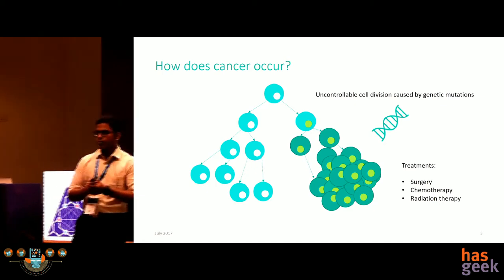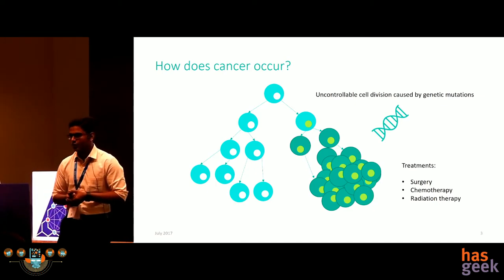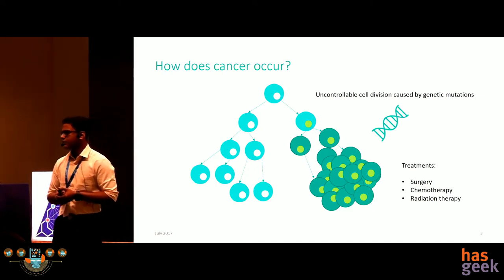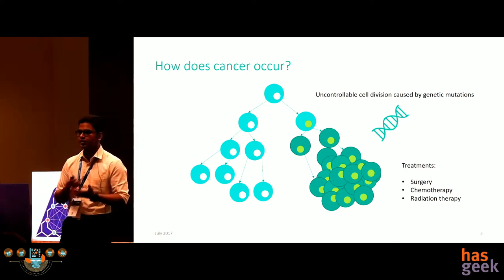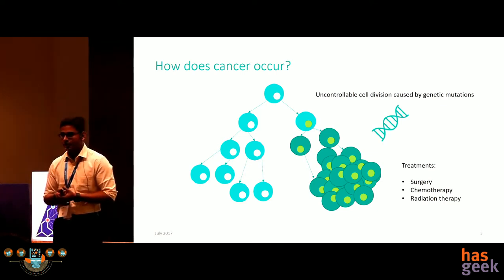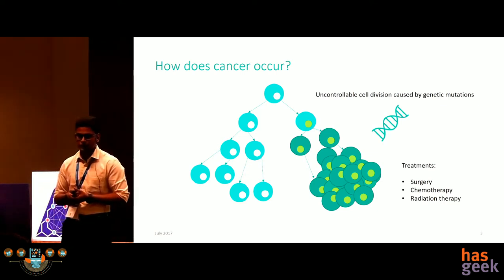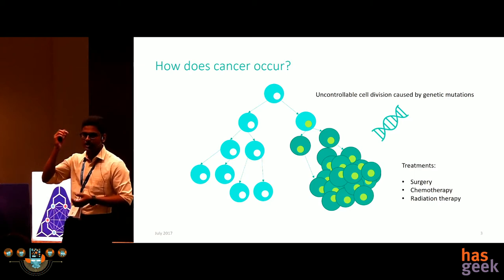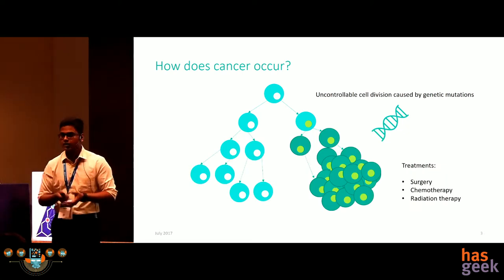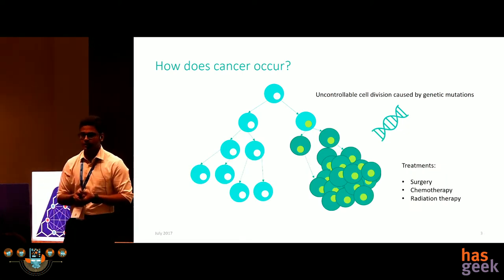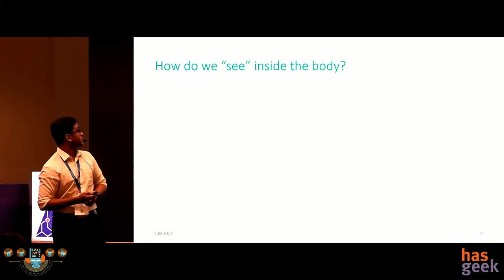If you have a lump of mass and want to know if it's cancer, the ideal scenario is to take a biopsy of the tissue and analyze it in a pathological slide. But for brain cancers especially, this is very difficult — you'd have to create a hole in your skull to take tissue from within the brain, which can impair other brain functions. This is where medical imaging comes into the picture.